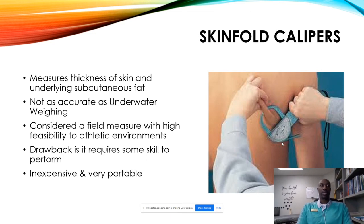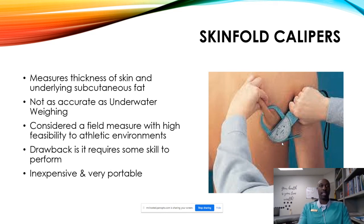For skinfolds, we're looking at subcutaneous fat. It's not as accurate as underwater weighing; however, it's considered a field measure and has high feasibility for athletic environments. The drawback is that it needs a little bit of skill to master. Typically five- and seven-site protocols are the norm, though three-site can be done. Seven-site would be performed with three consistent readings at each site to get a valid result. It's inexpensive and very portable — a common technique still used today. The device shown is a Lange skinfold caliper.